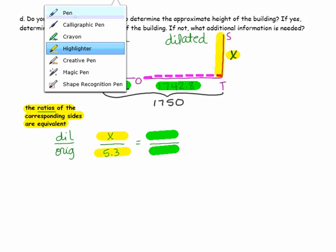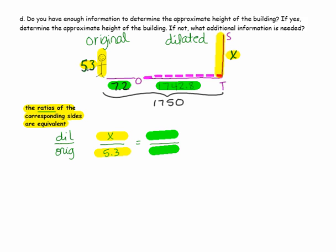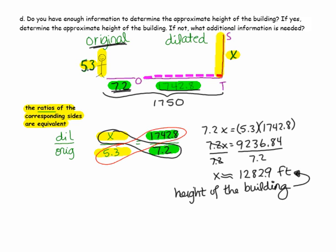It's important to put them in the right position to get the right answer. The top (dilated) amount is 1,742.8 and the original is 7.2. Pause the video, write your cross product, and solve for X. The height of the building rounded to the nearest tenth is 1,282.9 feet.